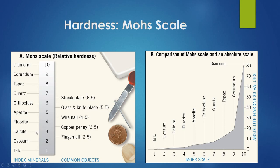A copper coin can scratch calcite, gypsum, and talc, but not fluorite. So if you've got a white or light-colored glassy mineral and you can't scratch it with a copper penny, it's fluorite or above. The streak plate cannot scratch quartz — quartz will scratch into it. But orthoclase, another light-colored mineral, if it leaves powder on the streak plate, you know it's orthoclase and not quartz.